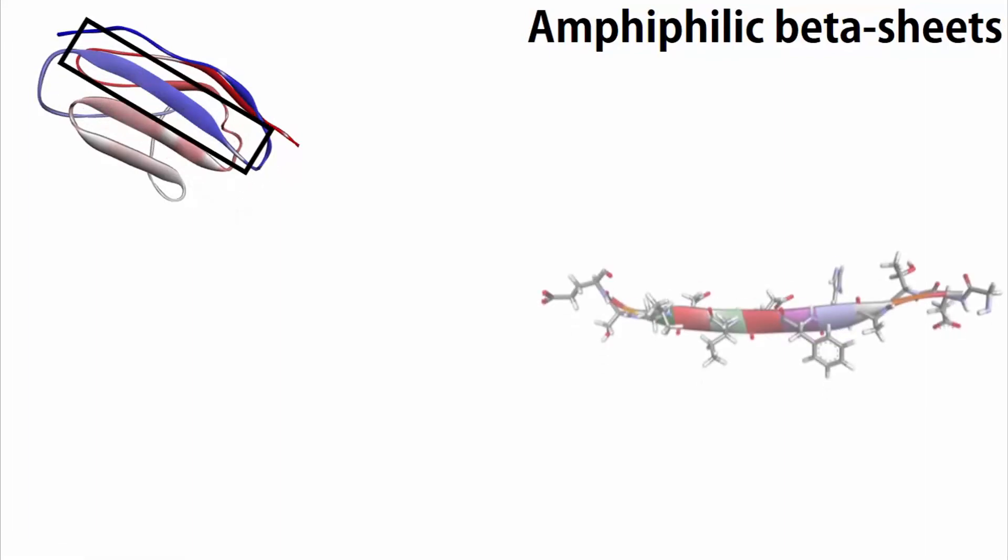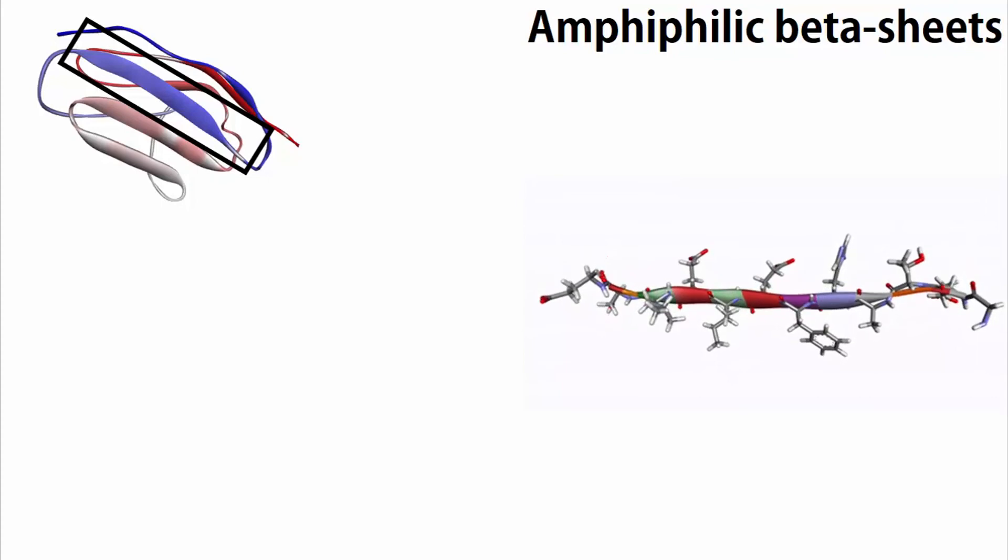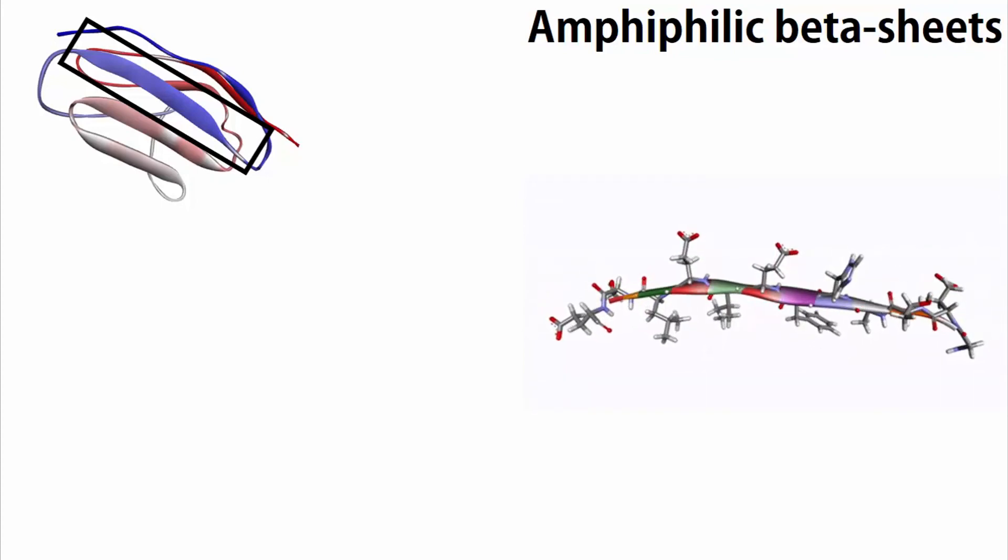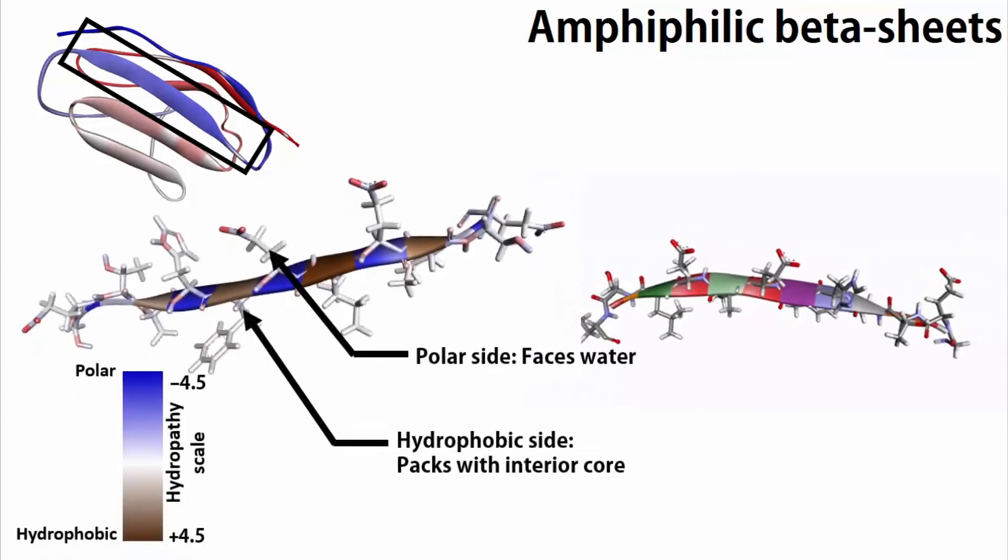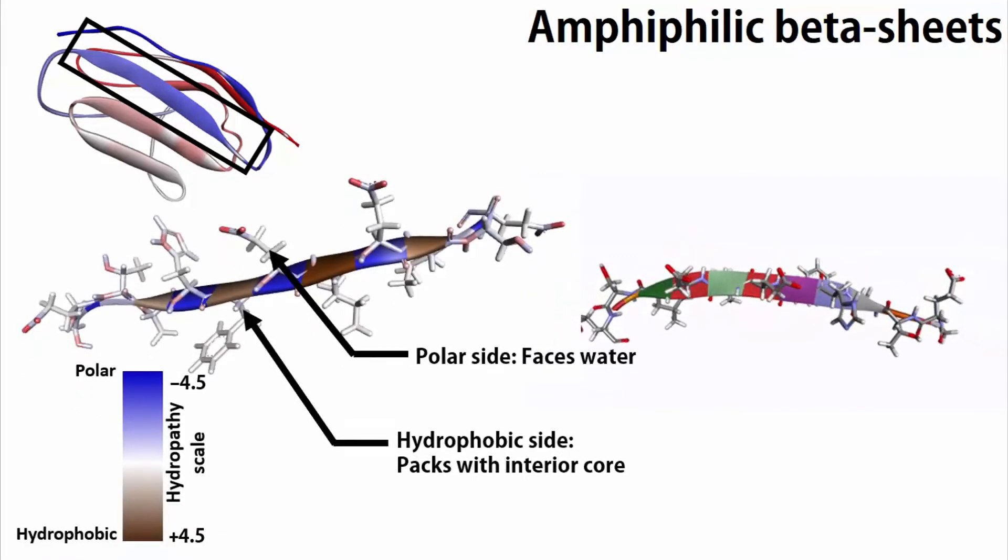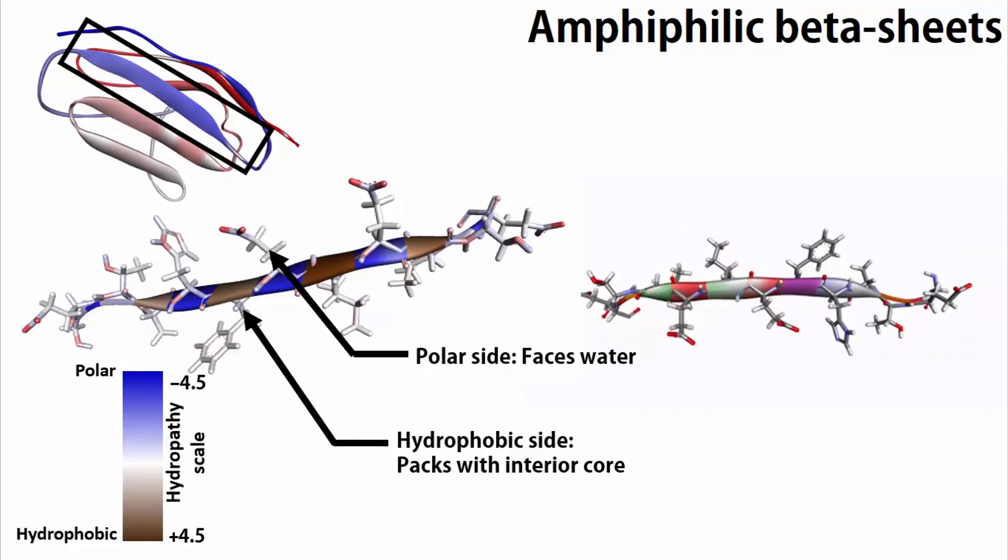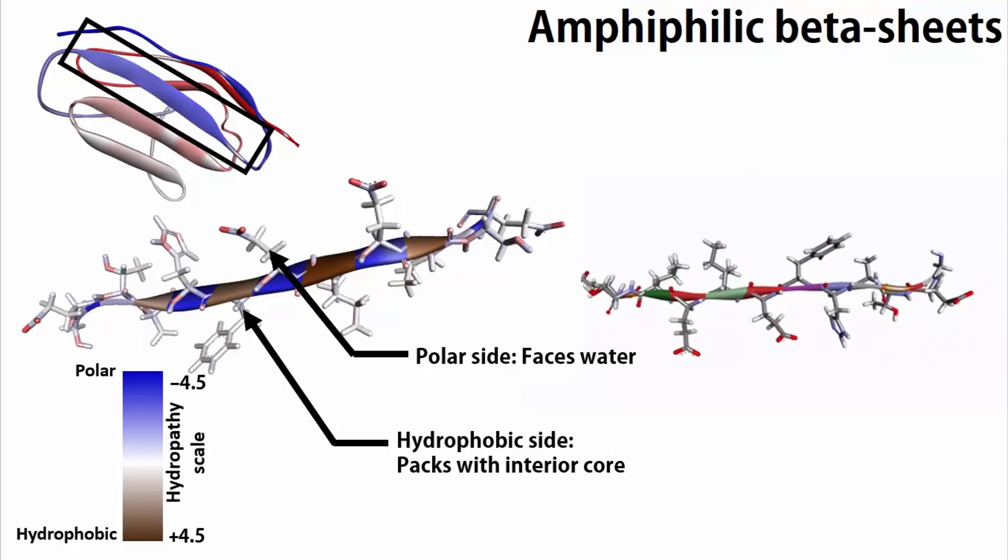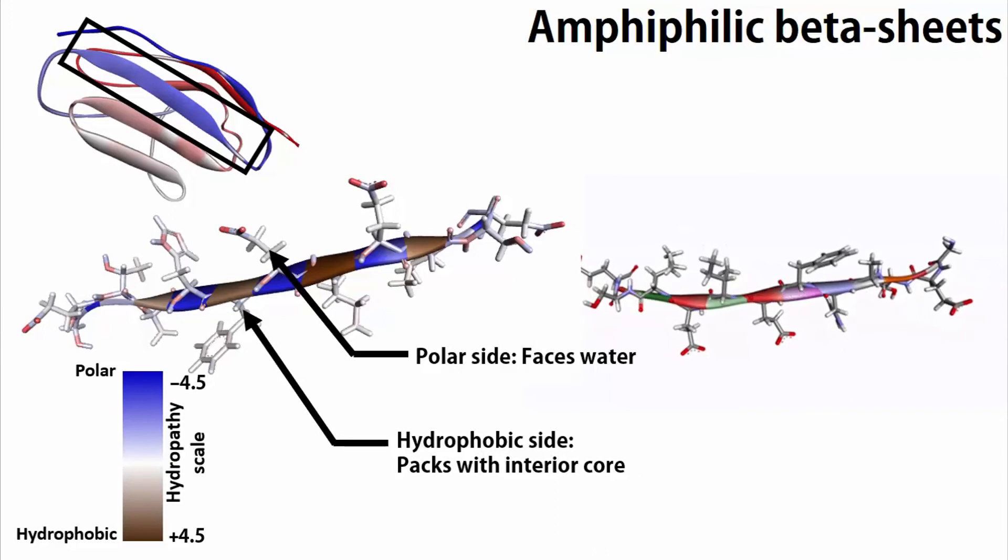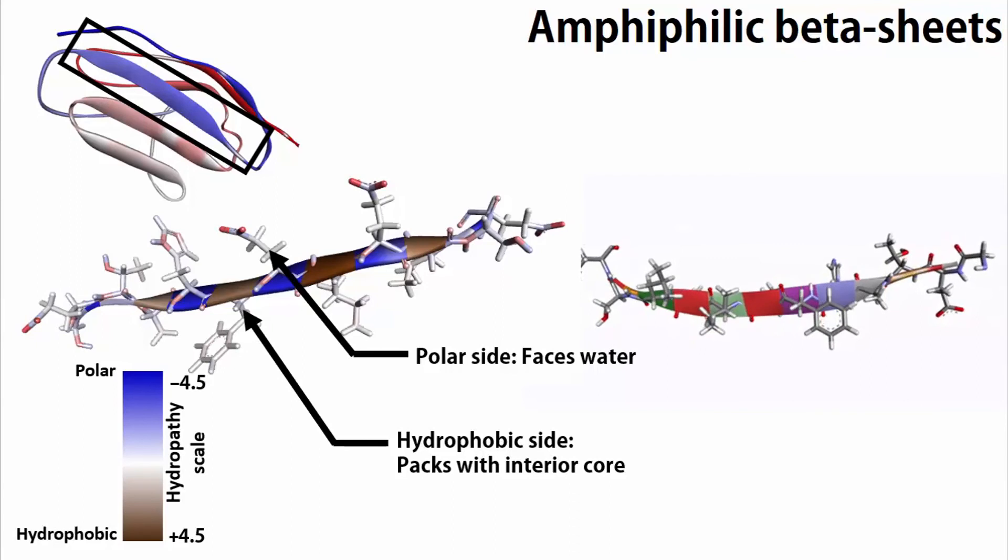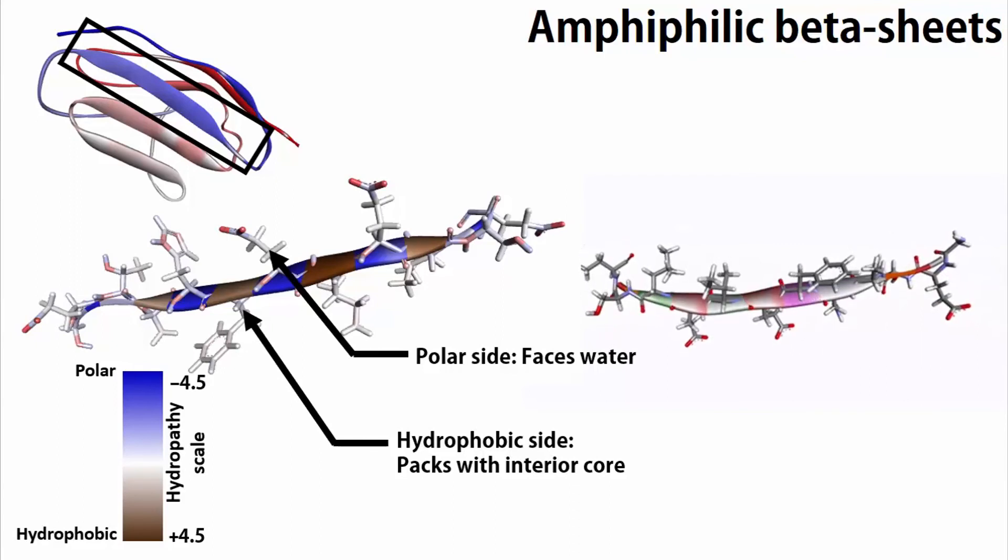Like alpha helices, beta strands can be amphiphilic as well. Since in beta sheets, side chains of two successive amino acids point in the opposite directions, a stretch of alternating hydrophobic and hydrophilic residues can generate an amphiphilic beta strand. Just as alpha helices, such strands are observed at protein surface with hydrophobic phase covering the protein core and hydrophilic phase facing the bulk water.